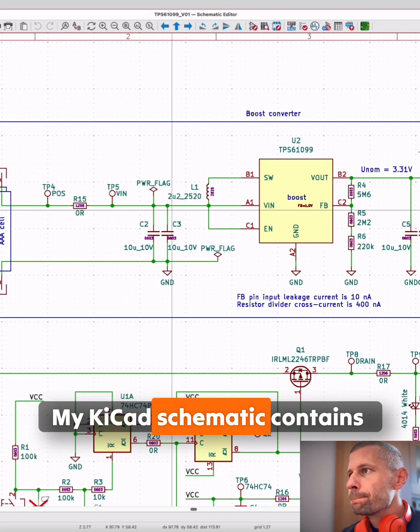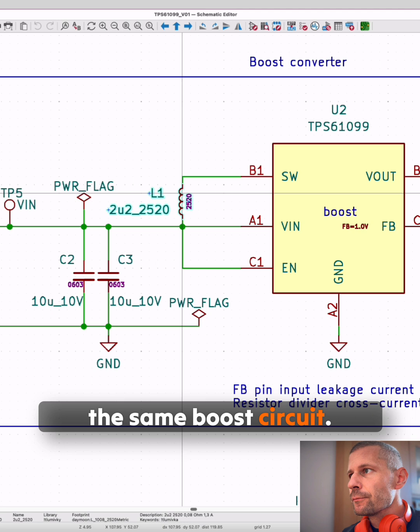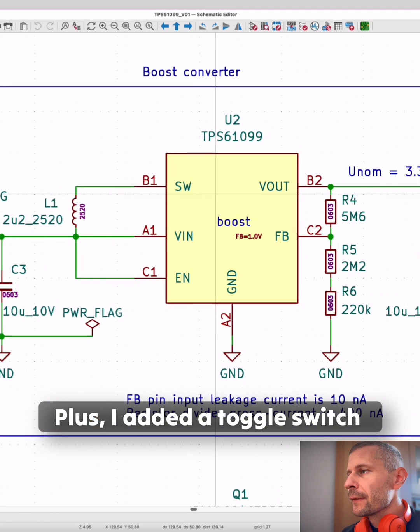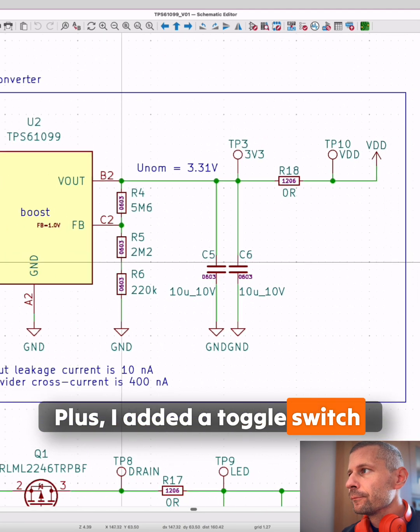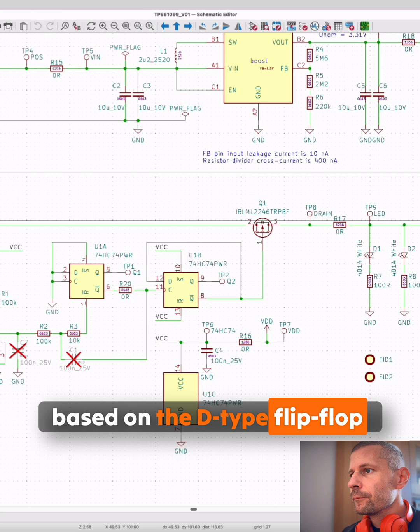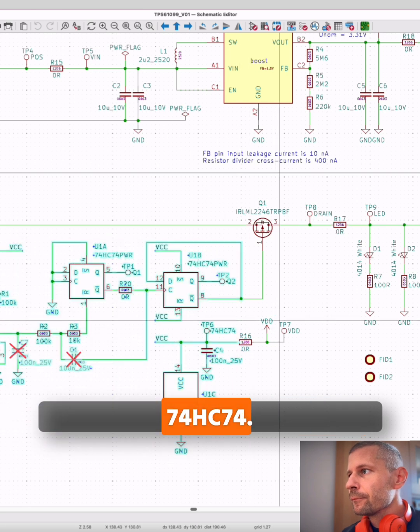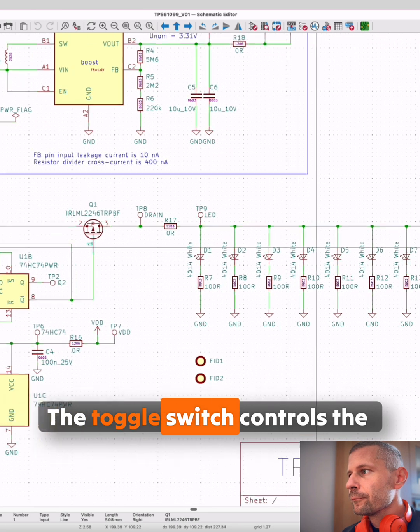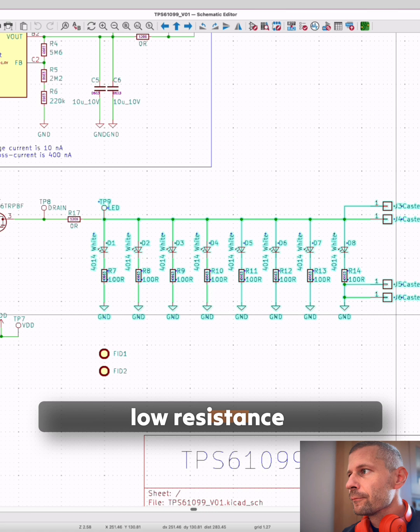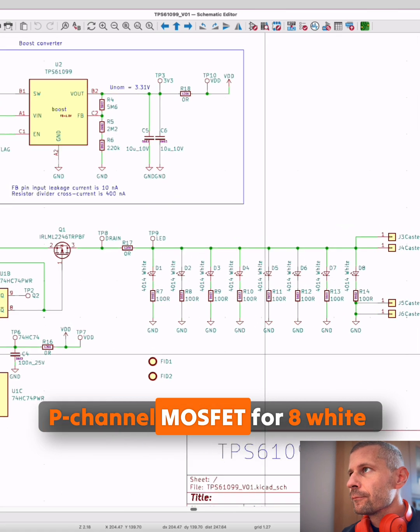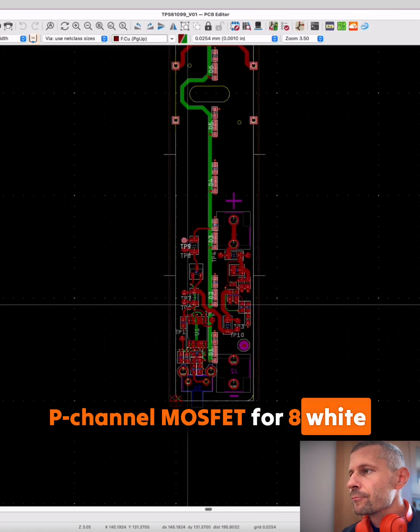My Kicad schematic contains the same boost circuit. Plus, I added a toggle switch based on the D-Type flip-flop 74HC74. The toggle switch controls the low-resistance P-channel MOSFET for 8 white LEDs.